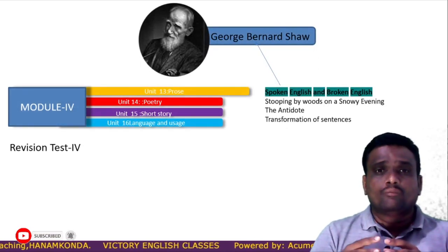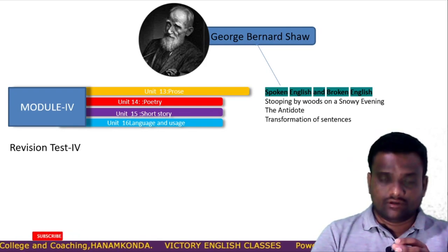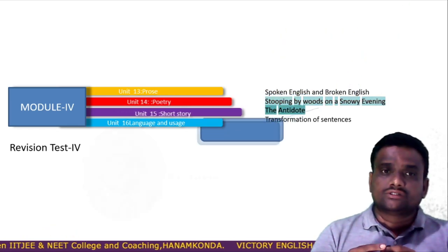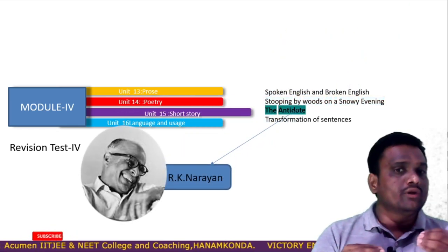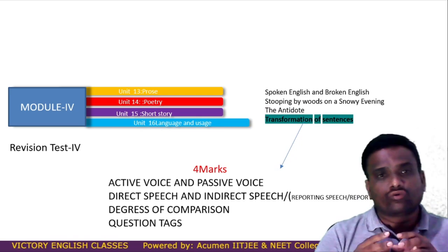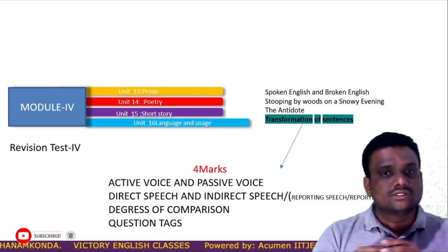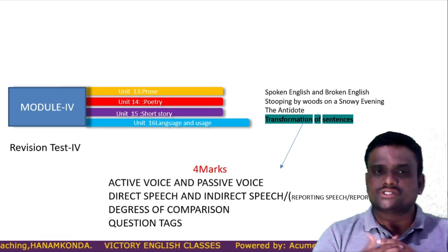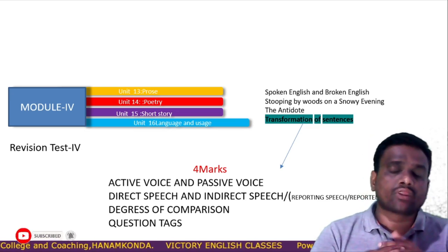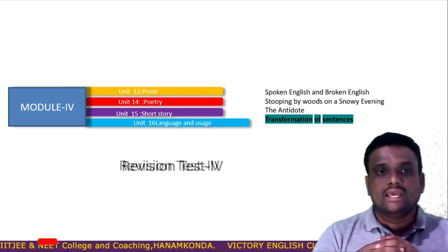Module number four. The prose is 'Spoken English and Broken English' by George Bernard Shaw. The poetry is 'Stopping by Woods on a Snowy Evening' by Robert Lee Frost. The short story is 'The Antidote' by R.K. Narayan. Language and usage is transformation of sentences, which gives you four marks. Transformation of sentences covers active voice, passive voice, direct and indirect speech (also called reporting and reported speech), degrees of comparison, and question tags. After finishing this, through the fourth module, you will have a revision test.